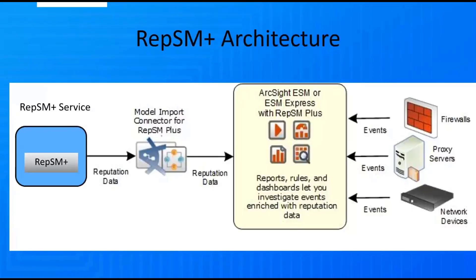As you can see, there are three main components of RepSM Plus. The first is the MicroFocus RepSM Plus service. This service collects the indicators of compromise from various sources and provides a single point of distribution for the RepSM Plus data. This data consists of IPv4 addresses as well as domain names that have been collected from sources throughout the Internet and deemed as suspicious or malicious.